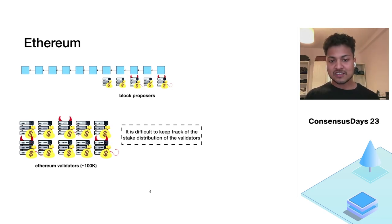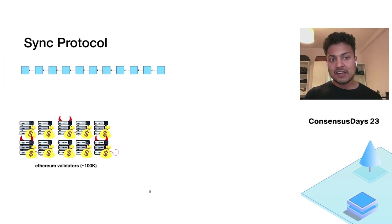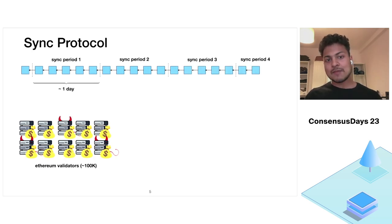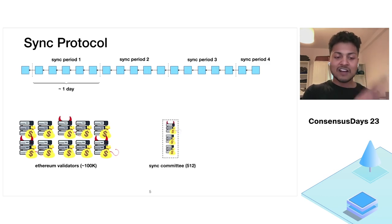For this, to circumvent this problem, Ethereum proposes a sync protocol. In sync protocol, the time is divided into bigger chunks of period of around one day, referred to as sync period. And the original validator set is sampled into a smaller committee of size 512, referred to as sync committee.